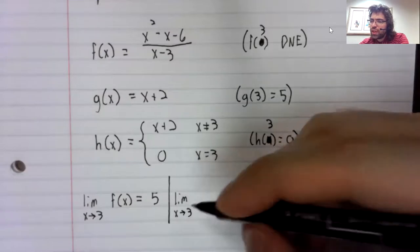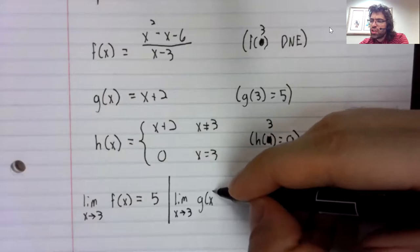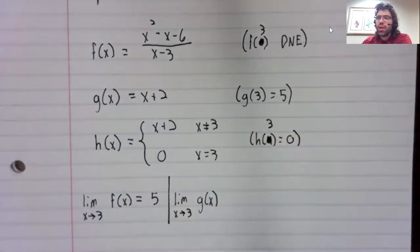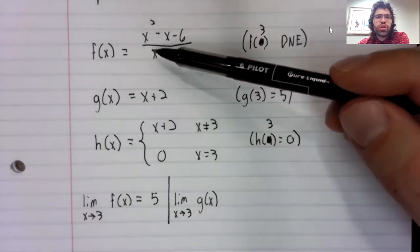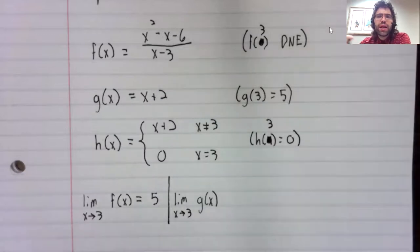What about the limit as x approaches three of g of x? Well, remember our observation that these functions are identical everywhere except for three.